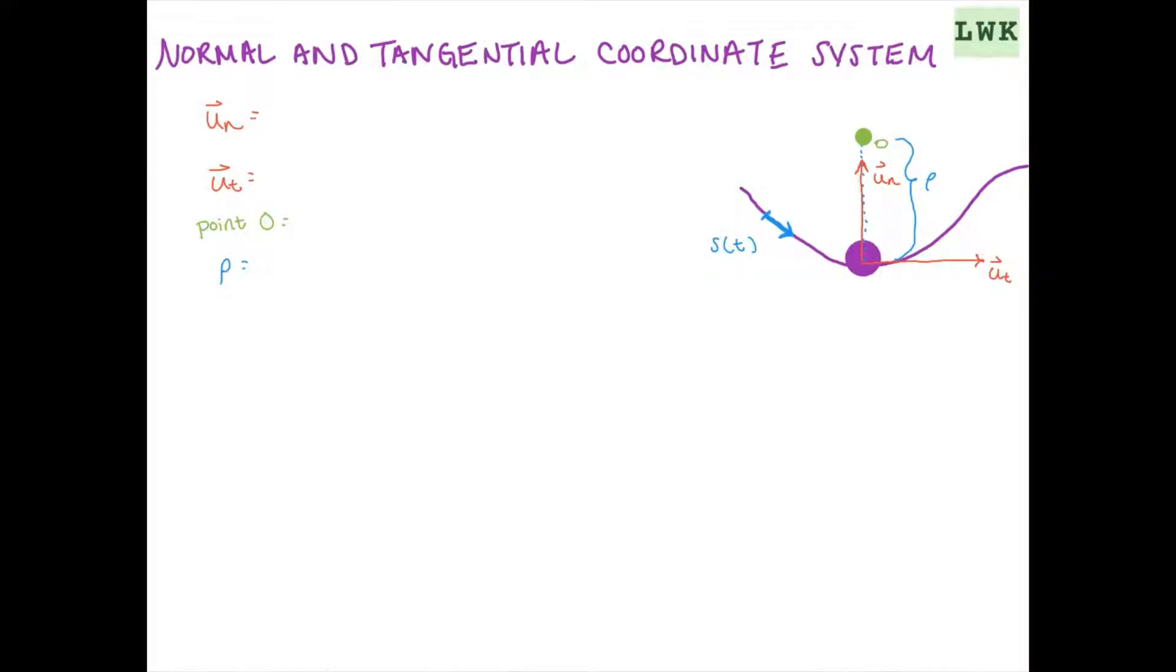We've covered the Cartesian coordinate system, so now we're going to jump in and discuss the normal and tangential system. Let's imagine that we have a particle that's moving along a path, as you can see here, and we're going to start by looking at the axes.